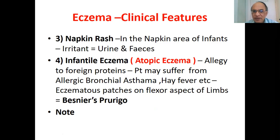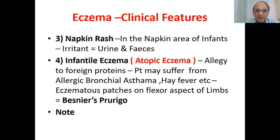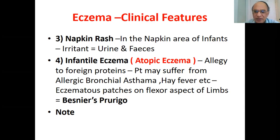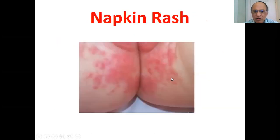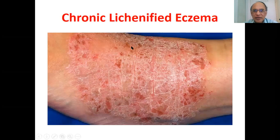Infantile eczema is also called atopic eczema. The patient may be allergic to foreign proteins and can suffer simultaneously from allergic bronchial asthma and hay fever — spring allergy. Eczematous patches appear on the flexor aspect of the limbs — this is called Besnier's prurigo, where 'prurigo' means itching. You can see the vesicles and redness in this example of atopic eczema, and here is the napkin rash in the perianal region.